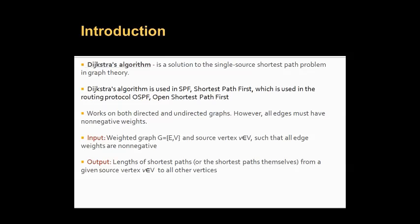It works on both directed and undirected graphs. However, all edges must have non-negative weights. The input is a weighted graph G equal to (E, V), where E represents the edges — a pair of vertices — and V stands for vertices, which can also be called nodes. The source vertex is an element of the vertices such that all weights are non-negative.